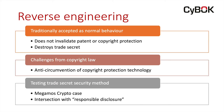Reverse engineering historically has been accepted as normal behavior — tearing a product down to try to figure out how it's been designed, how it's been put together, to try to figure out secret methodologies that a competitor hasn't published. The reason reverse engineering has been accepted is that it doesn't invalidate any patent rights or copyright protection. So if you pull a competitor's product to bits and discover things, if that competitor has already taken out a patent, there's nothing about your reverse engineering that reduces those rights. What successfully reverse engineering a product will do, however, is destroy any trade secret protection that might be inherently involved inside the product.